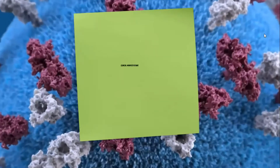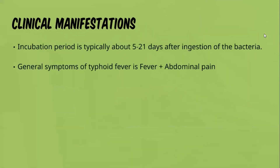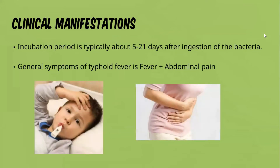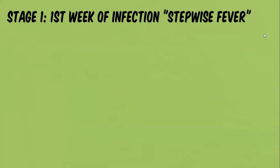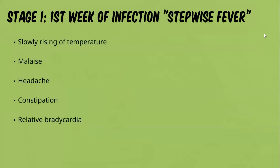The incubation period for typhoid fever is about 5 to 21 days after ingestion of the bacteria. The general symptoms include fever and abdominal pain. Stage one, or the first week of infection, is also known as the stepwise fever stage, characterized by slowly rising temperature.